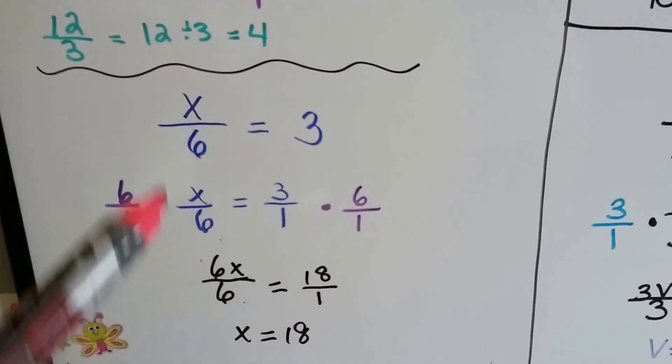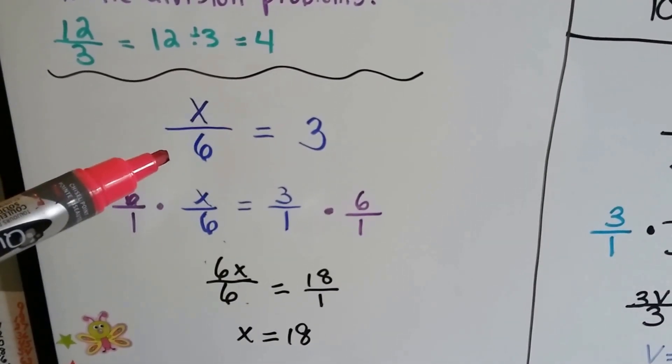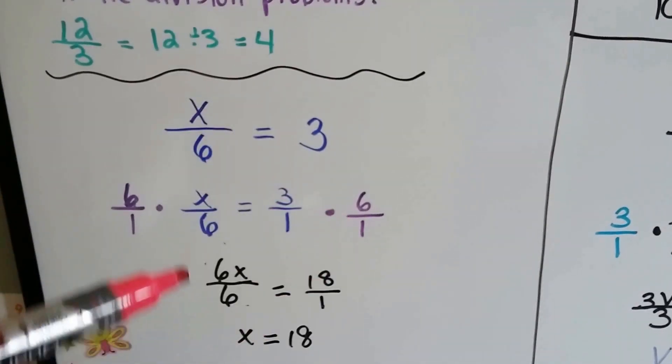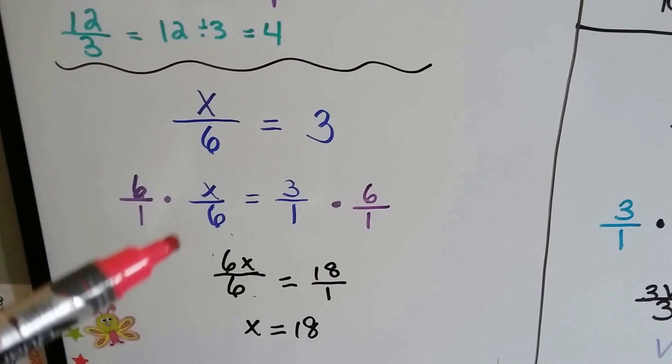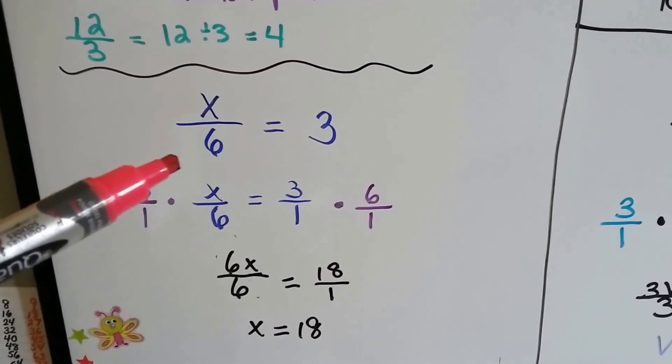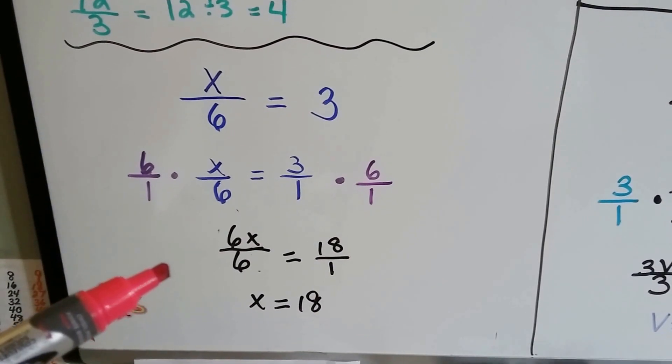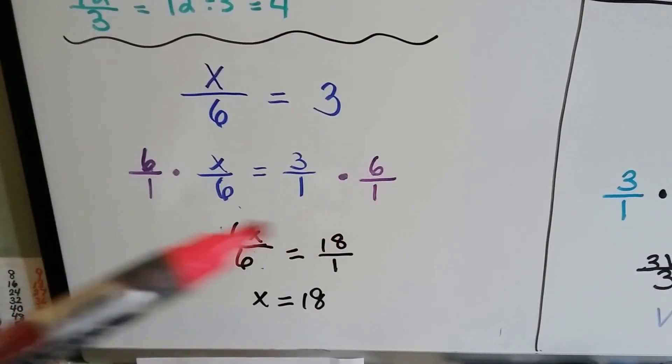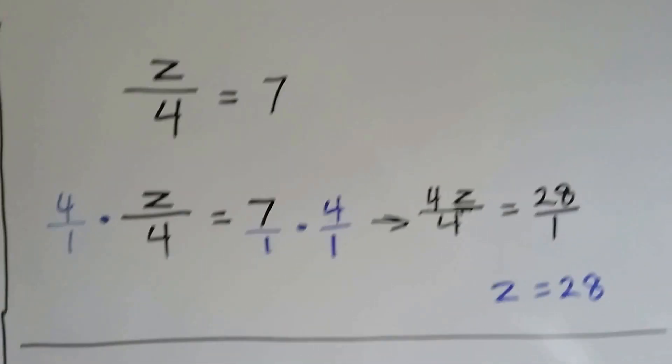The reason I'm showing you this in such an easy problem is, in the future, we're going to come across some very difficult problems. If you can understand how I did this, you're going to understand the difficult problems. I know we could have just done 6 times 3, but I'm setting you up for more difficult problems where we're going to have to multiply each side. I want to make sure you understand how to do this. Let's take a look at this one.